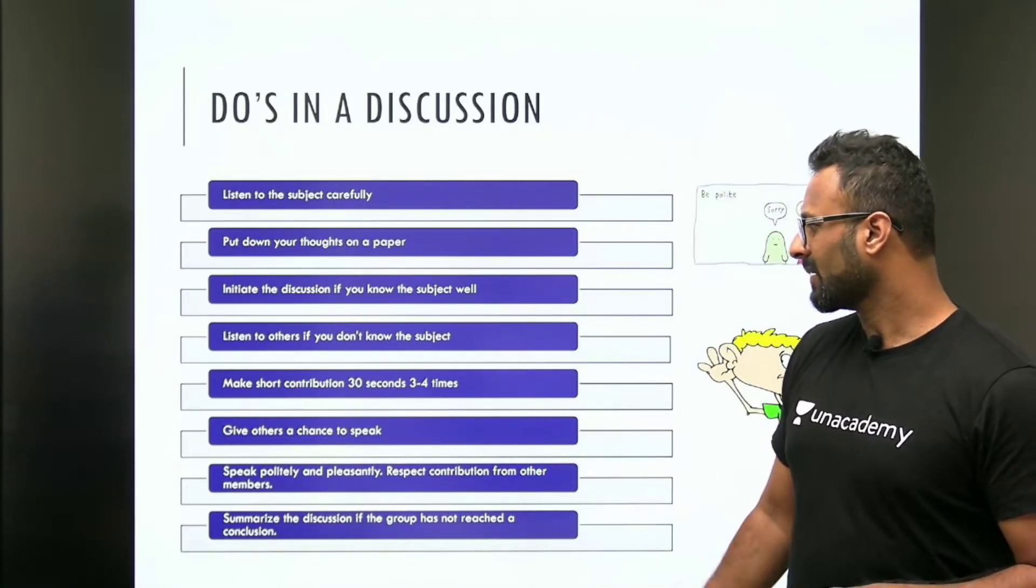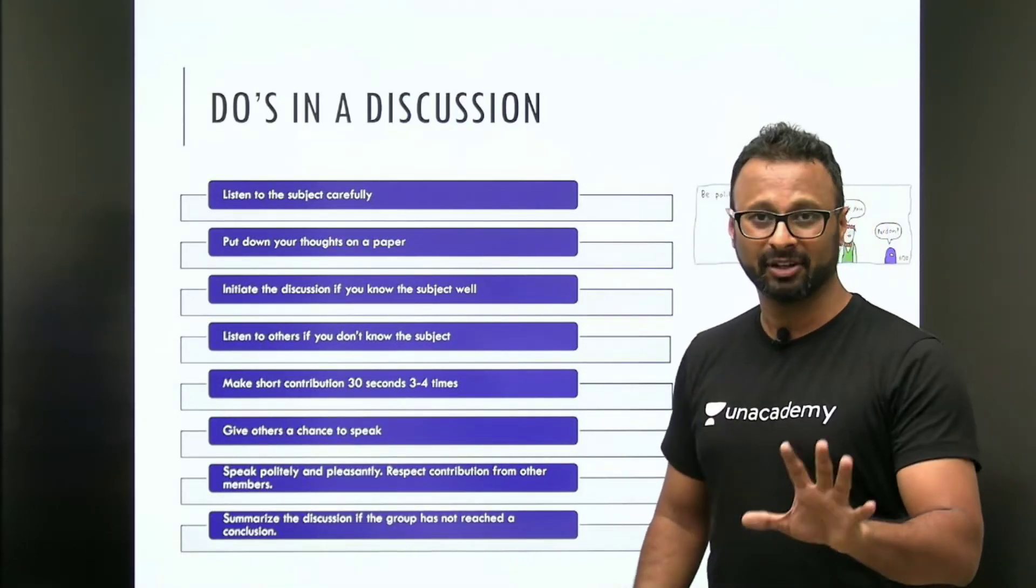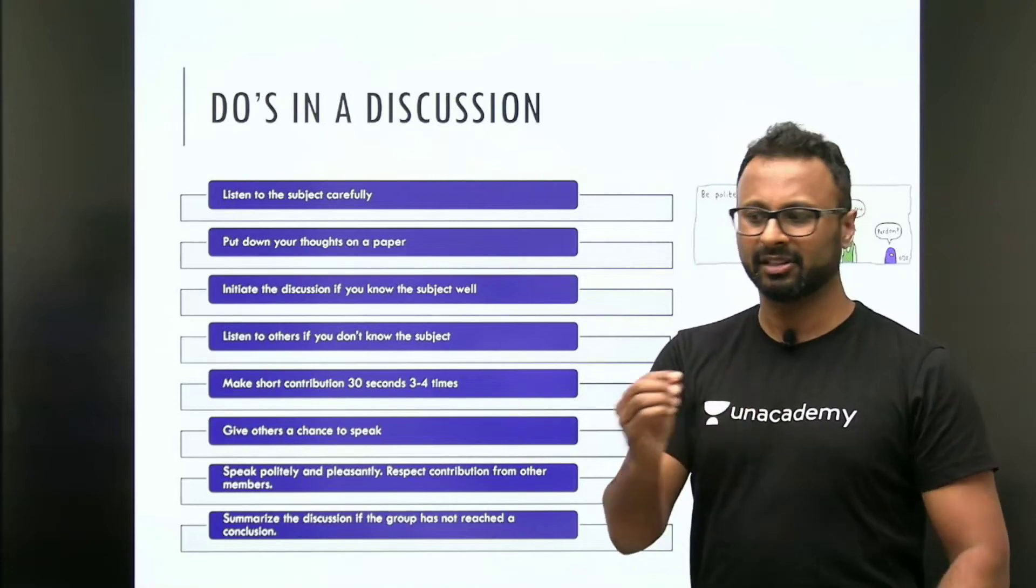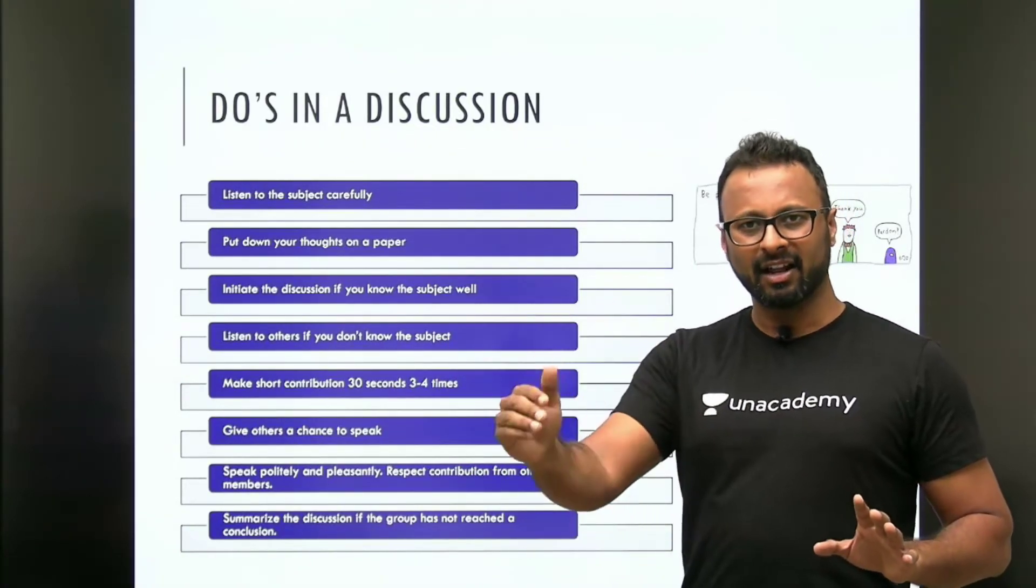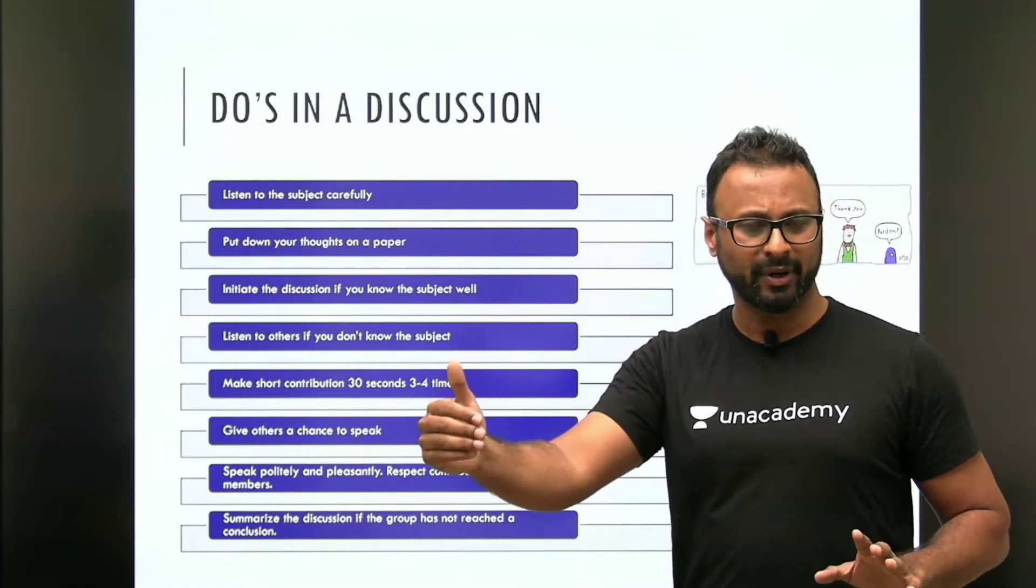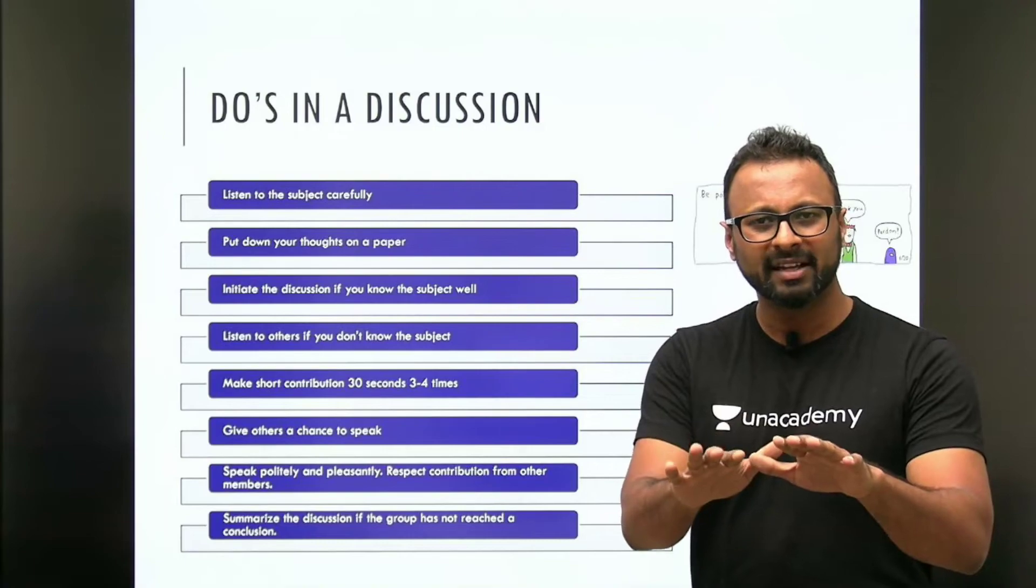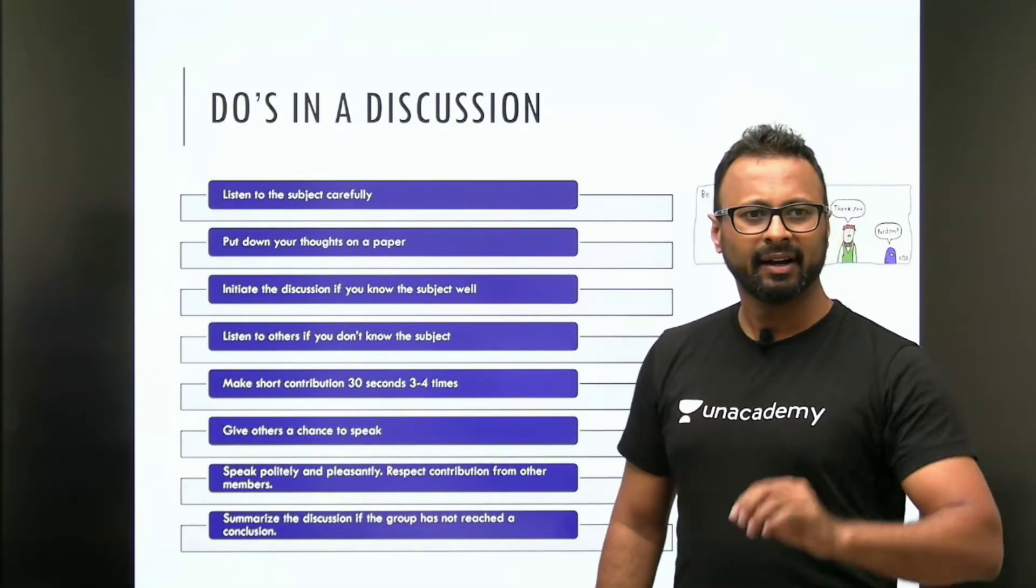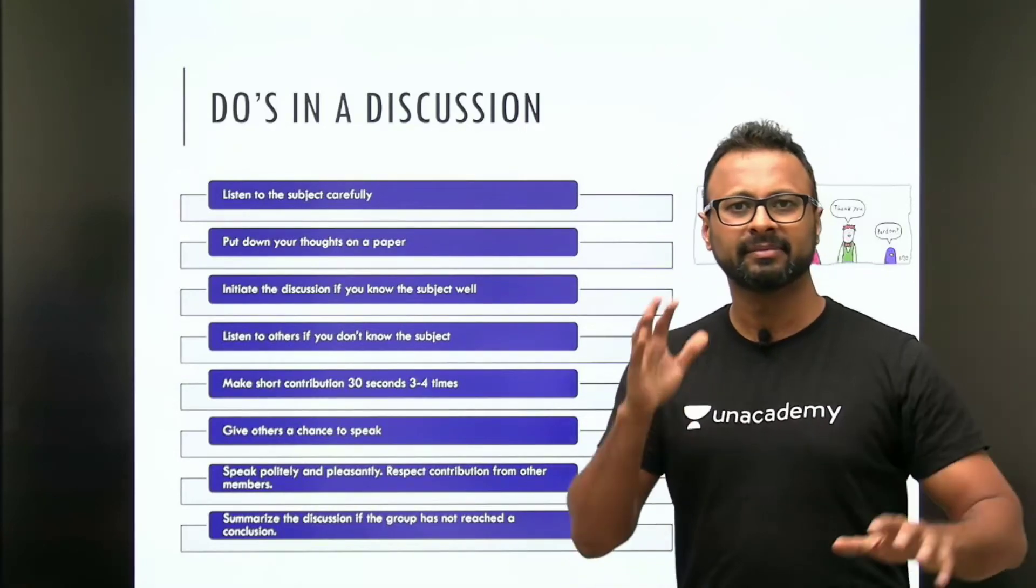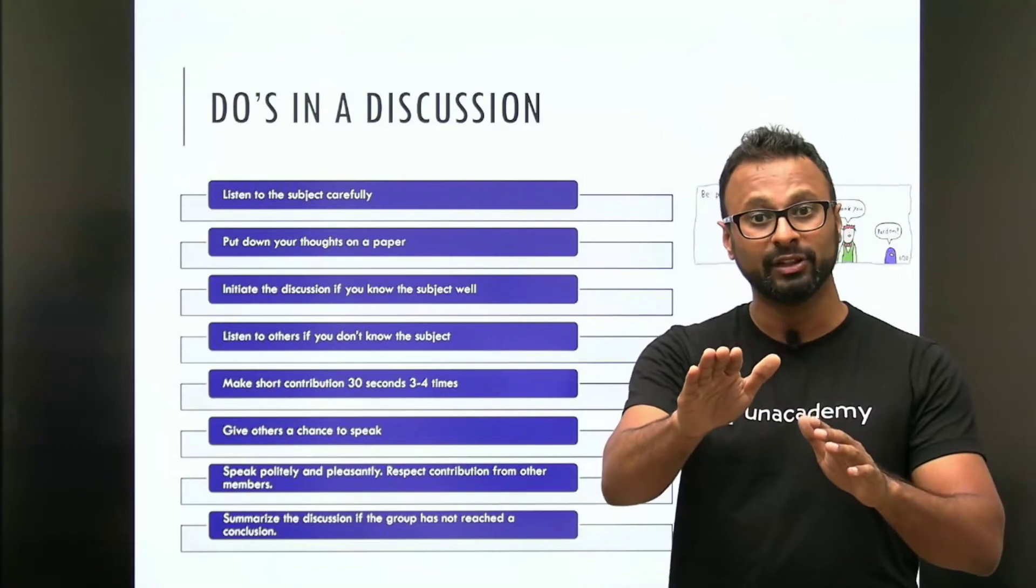Speak politely and pleasantly. Respect contributions from other members. If somebody is talking, don't interject. Somebody just started, 2-3 seconds. And then, if you interject, it does not come across well. Allow them to talk for 10 to 15 to 20 seconds. Then, you might want to cut in smoothly by saying, I would like to add. Thank you. That's a good point. I have a different thought. Interject very beautifully. It has to come in very smoothly.